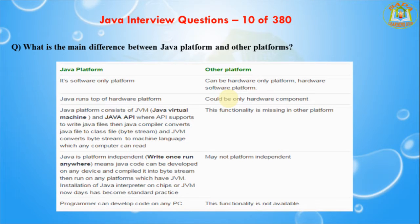Next I am going to discuss about what are the main differences between the Java platform and other platforms. The Java platform is a software-only platform, and Java runs on top of a hardware platform. The Java platform consists of a Java Virtual Machine and Java API. The Java compiler converts Java files to class files, and the JVM converts the byte stream to machine language which any computer can read. Java is platform-independent — write once, run anywhere — meaning Java code can be developed on any device, compiled into bytecode, and run on any platform that has JVM installed.